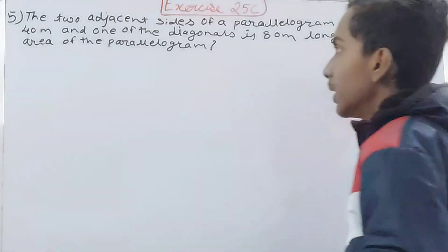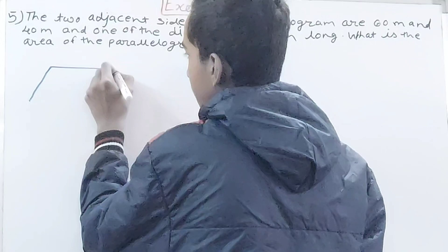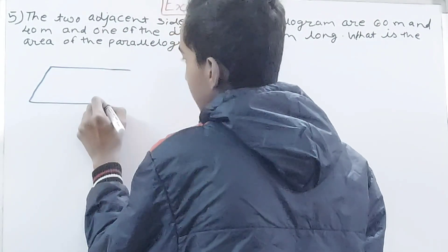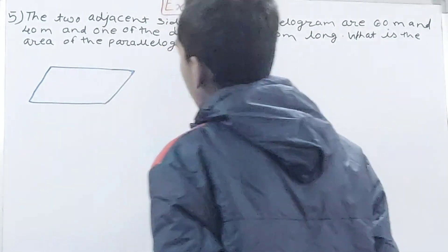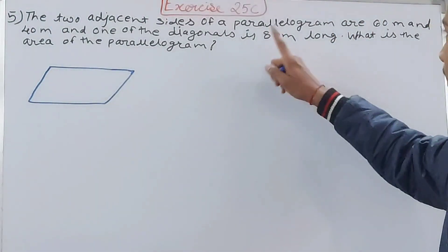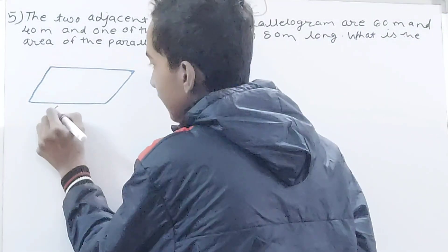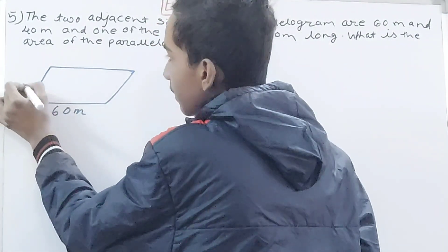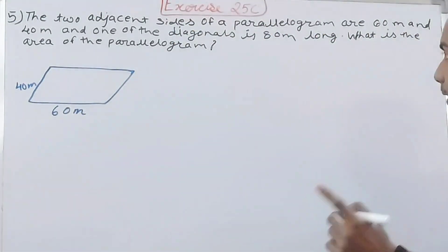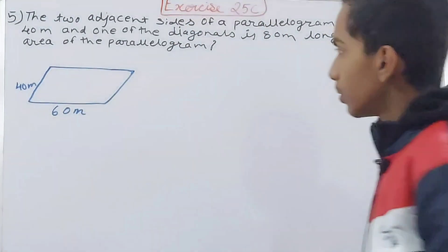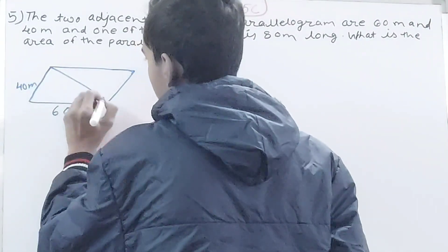I'll make a parallelogram here for your convenience. In this parallelogram, what has been given to us? Two adjacent sides are 60 meters and 40 meters. So one I will take here as 60 meters, the smaller one I will take as 40 meters. Now it is saying that one of the diagonals is 80 meters long, so I will take this diagonal. This is 80 meters long.